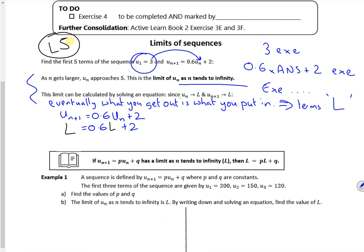So my formula, which was the next one, is 0.6 lots of the one you've got plus 2, becomes L equals 0.6 lots of L plus 2. So I've changed the terms into L and all I do now is rearrange it. So if I take 0.6L off, I've got 0.4L, which is 2 fifths.